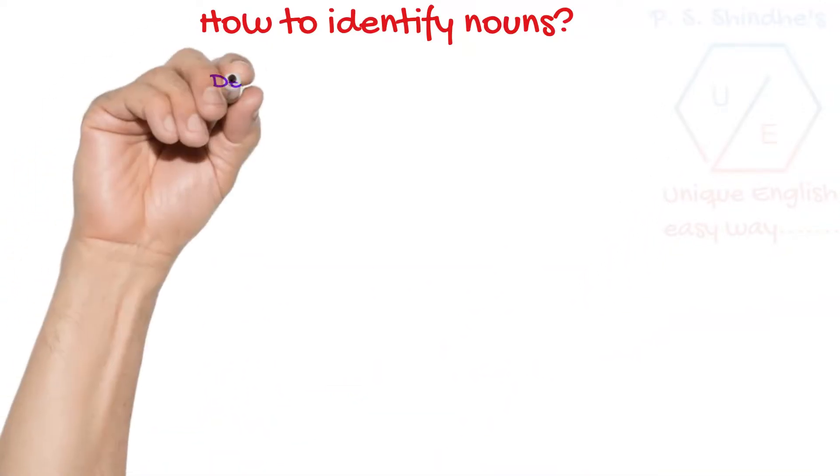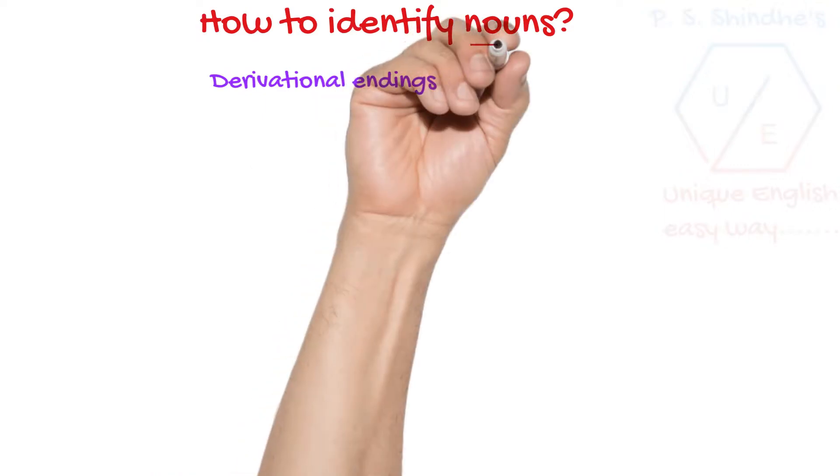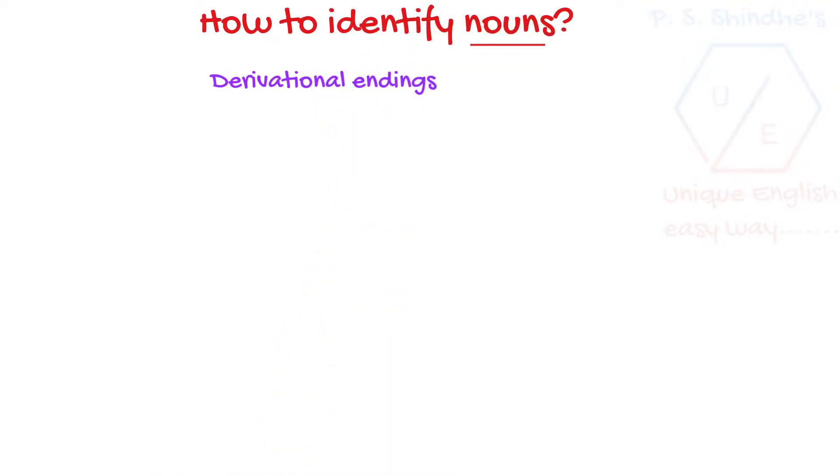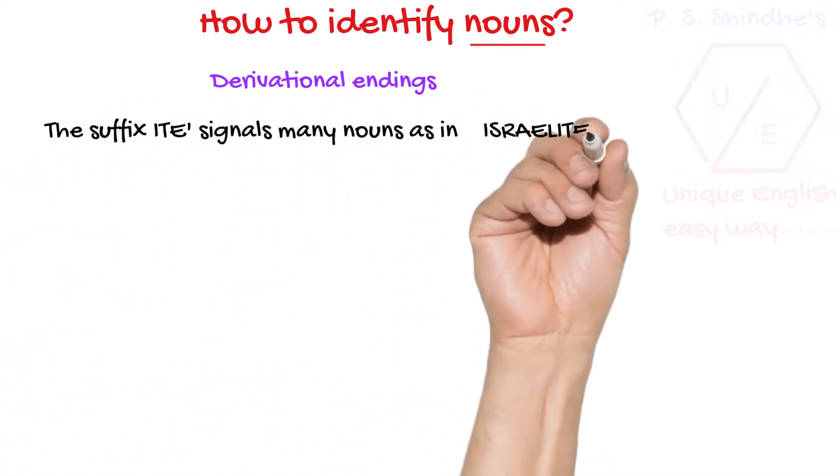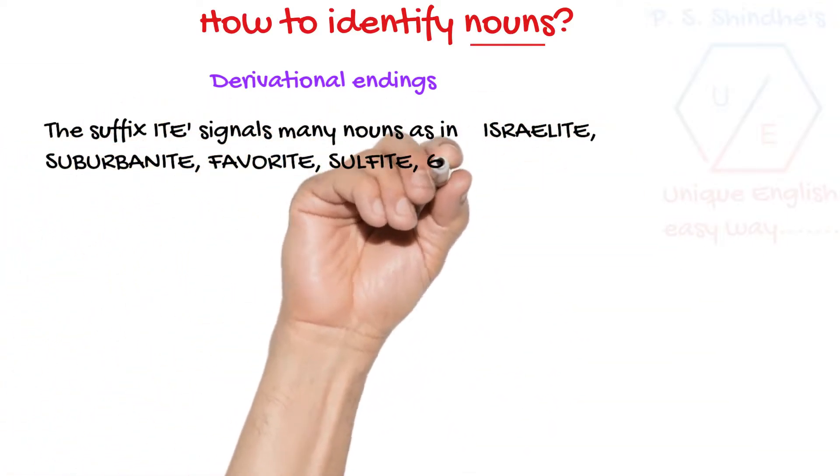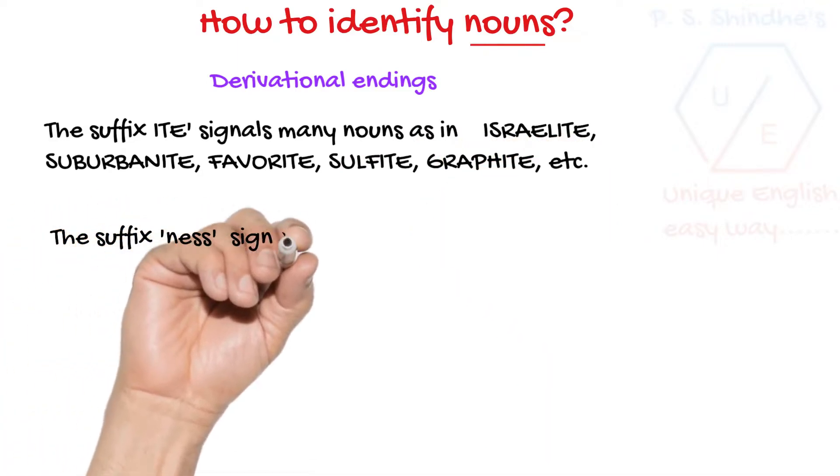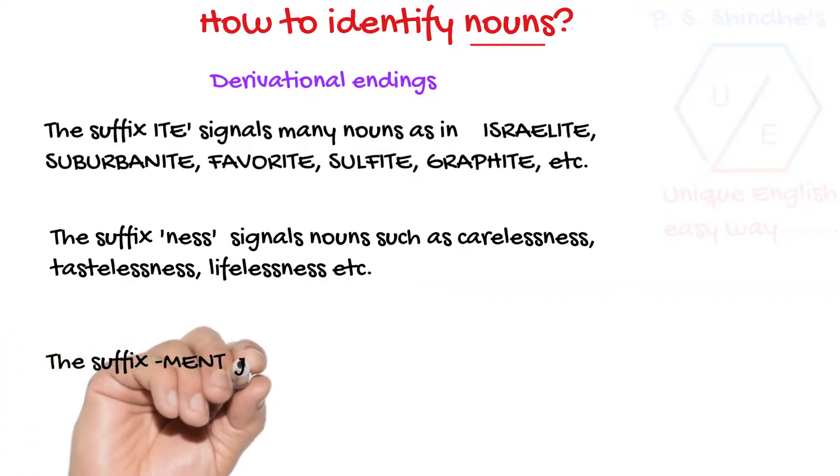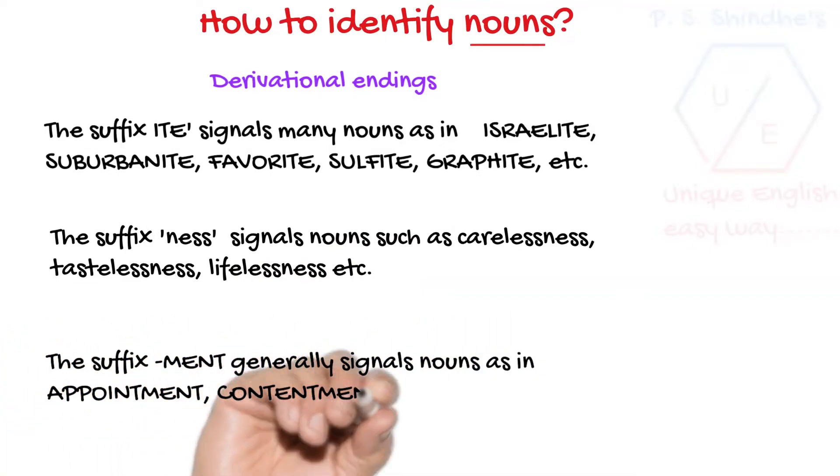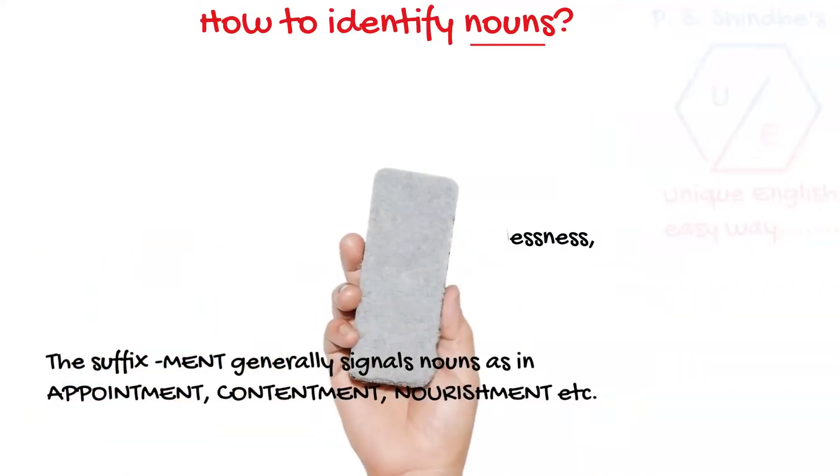There are words with derivational endings that provide clues to identify nouns. For example, the suffix ITE signals many nouns as in Israelite, suburbanite, favorite, graphite, etc. The suffix NESS signals nouns such as carelessness, tastelessness, likeliness, etc. The suffix MENT generally signals nouns as in appointment, contentment, nourishment, etc.